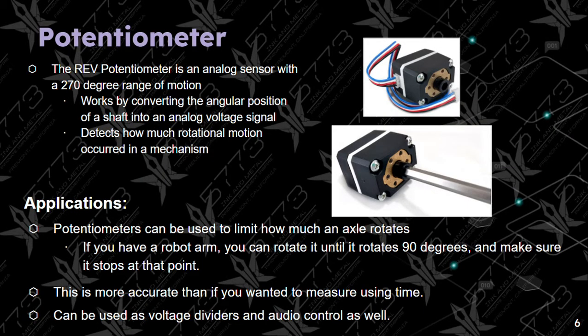The next sensor is a potentiometer. It is an analog sensor with a 270-degree range of motion. It works by converting the angular position of a shaft into an analog voltage signal, detecting how much rotational motion is secured in a mechanism. It can be used to limit how much an axle rotates — for example, rotating a robot arm exactly 90 degrees and making it stop at that point. It is more accurate than measuring angles using time.